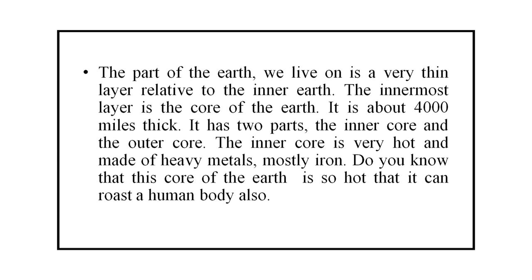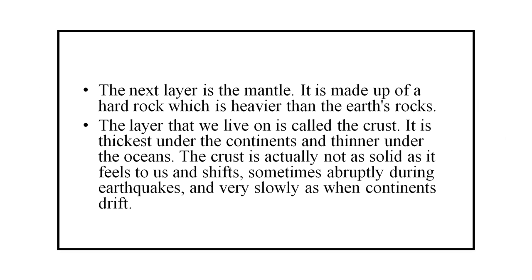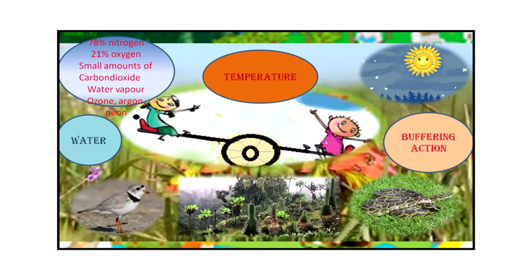The innermost layer is the core of the Earth, which has two parts: the inner core and the outer core. The inner core is very hot and made of heavy metals, mostly iron. The next layer is the mantle, made up of hard rock which is heavier than the Earth's surface rock. The layer that we live on is called the crust. It is thickest under the continents and thinner under the oceans. The crust is not as solid as it feels to us and shifts sometimes abruptly during earthquakes and very slowly as when continents drift.